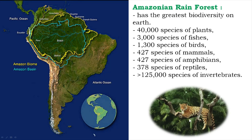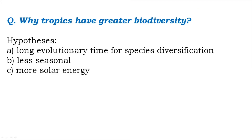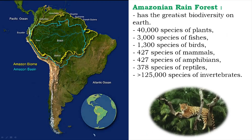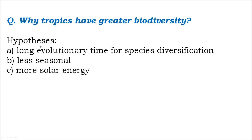An iconic animal of the Amazon rainforest is the jaguar — a big cat, distinct from a leopard. Anaconda, that large snake, is also an animal of the Amazonian rainforest. The Amazonian rainforest is said to have the greatest biodiversity on Earth. In the tropical region, biodiversity is quite high, with certain exceptions, but most tropical regions have very great biodiversity. The question given in your textbook is: why are tropics said to have higher biodiversity?